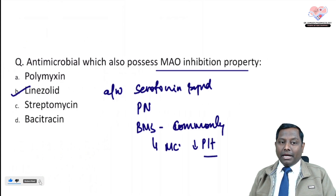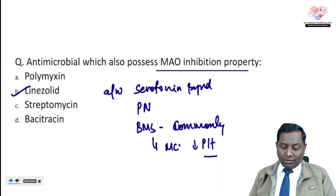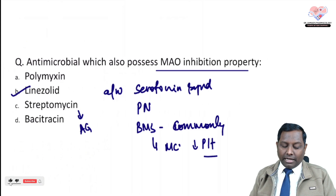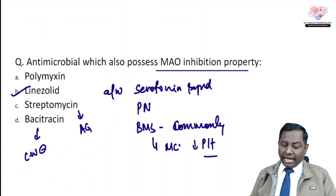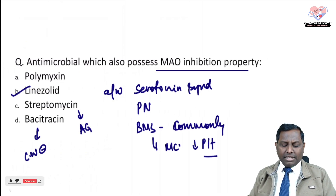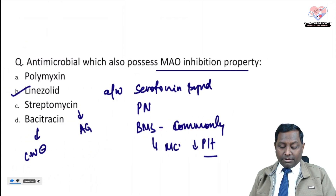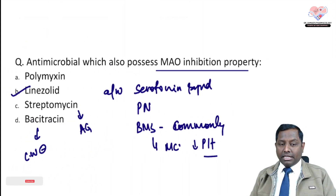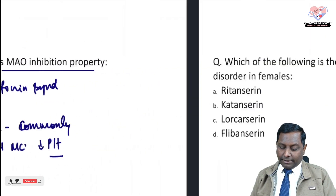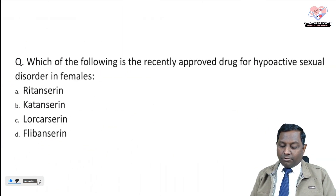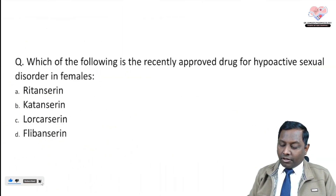Polymyxin is a cell membrane inhibitor utilized in serious ICU cases. Streptomycin is an aminoglycoside associated with nephrotoxicity and ototoxicity. Bacitracin is a cell wall inhibitor — nephrotoxicity is also seen with bacitracin, which is why its systemic use is not preferred.